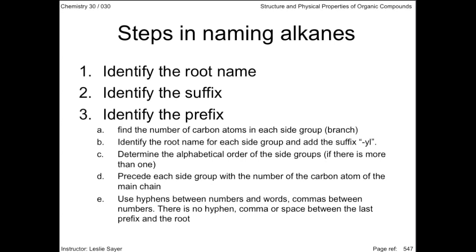Use hyphens between numbers and words, commas between numbers. There's no hyphen, comma, or space between the last prefix and the root. Also, when identifying identical side groups, use the "di" prefix for 2, "tri" for 3, and so on — like dimethyl and tripropyl.